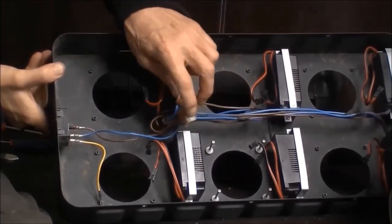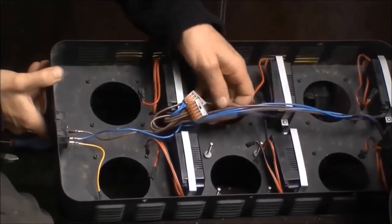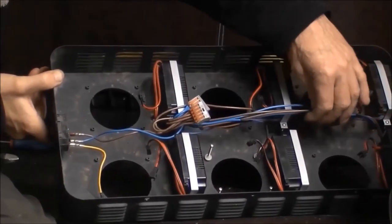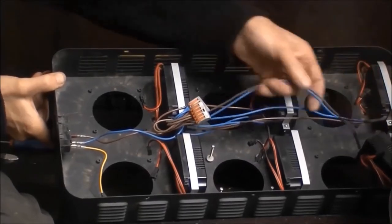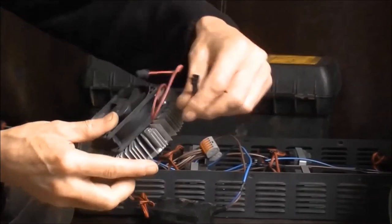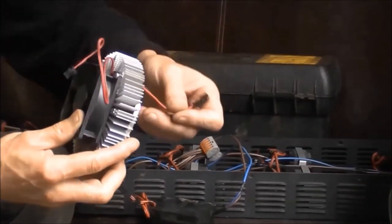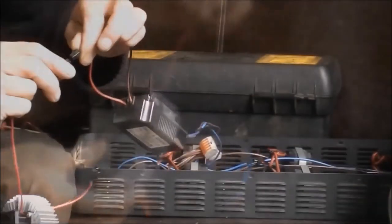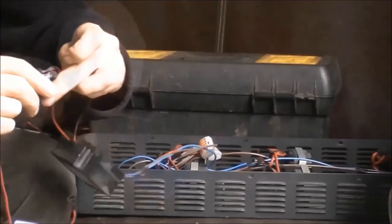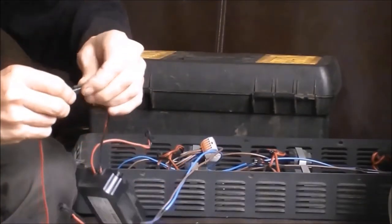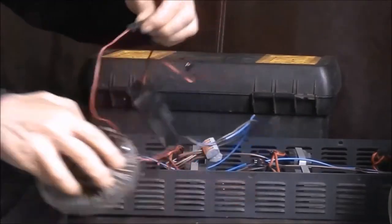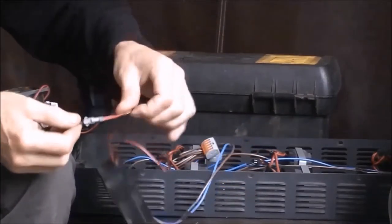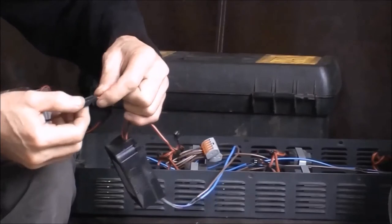And those DC cables as they come out of the power supplies terminate in a male and a female ended wire. As you can see there, the female ended wire on the power supply is for the cooling fan and the male ended one is for the 72 volts for the COB.